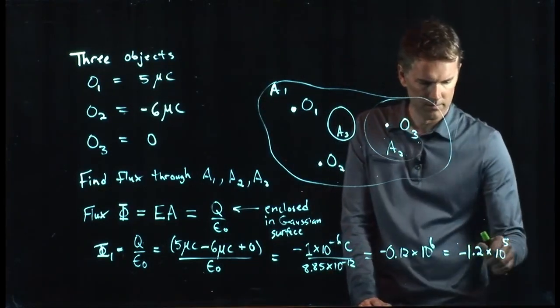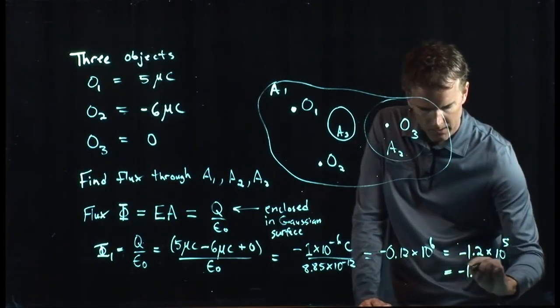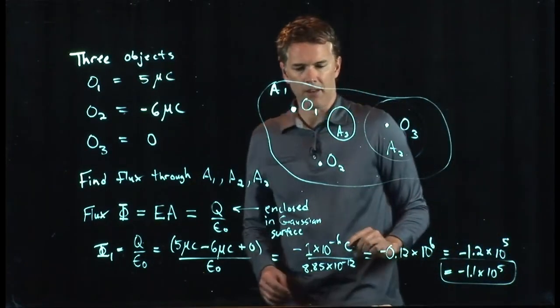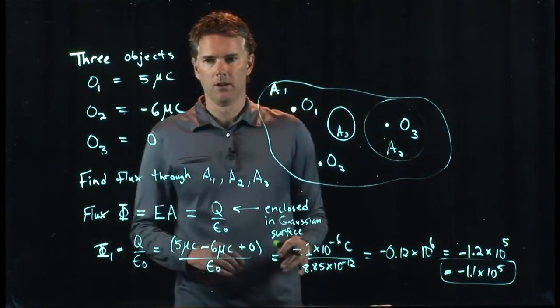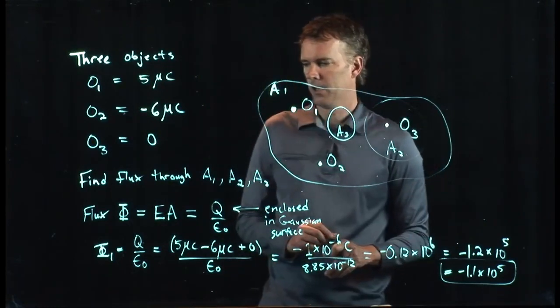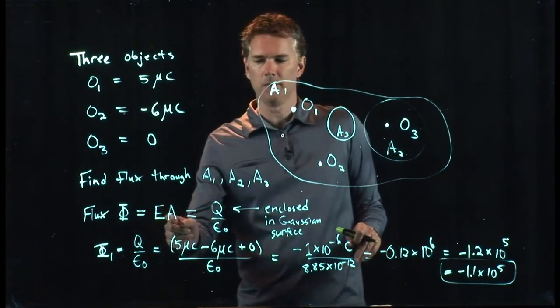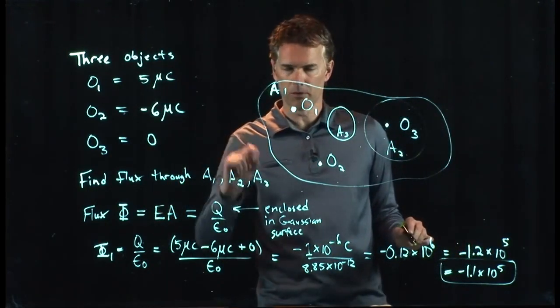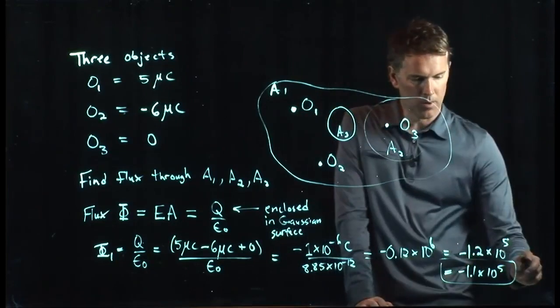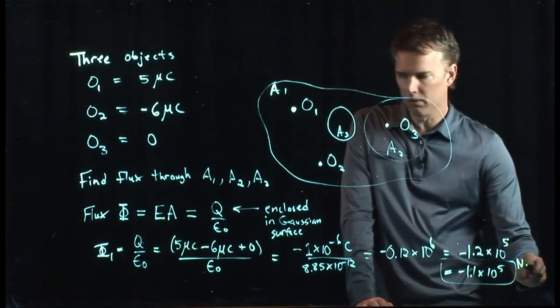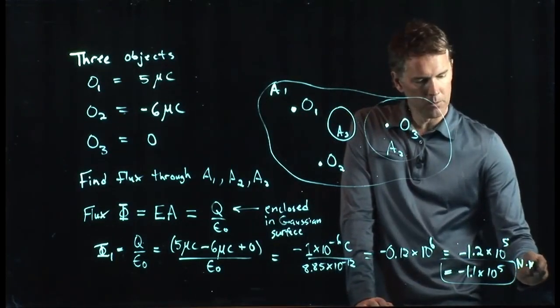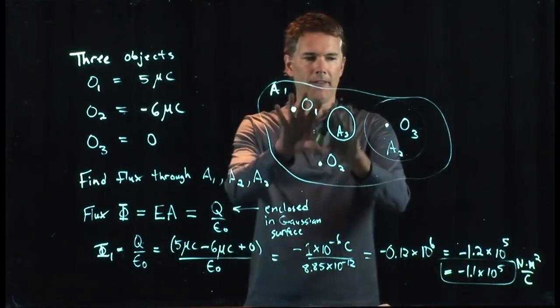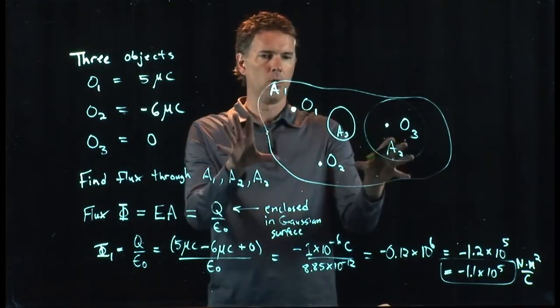1.1 times 10 to the 5, and you can figure out what the units are on that. It's going to be E times A, and so the units we said for E are newtons per coulomb, and A is square meter, so it's going to be newton meter squared per coulomb. That's flux phi 1 through the whole thing.